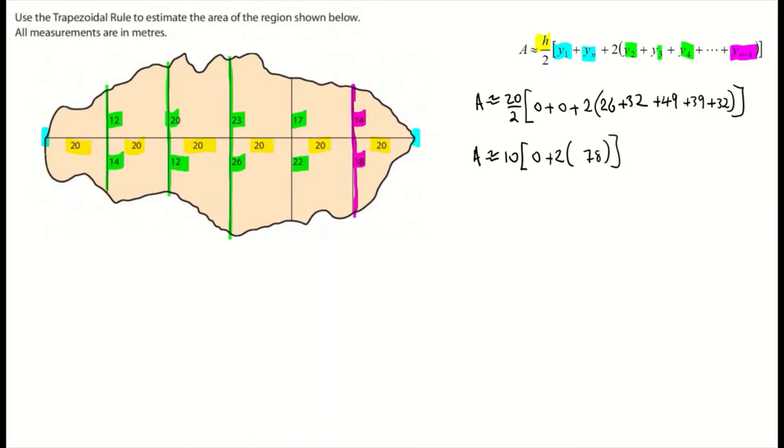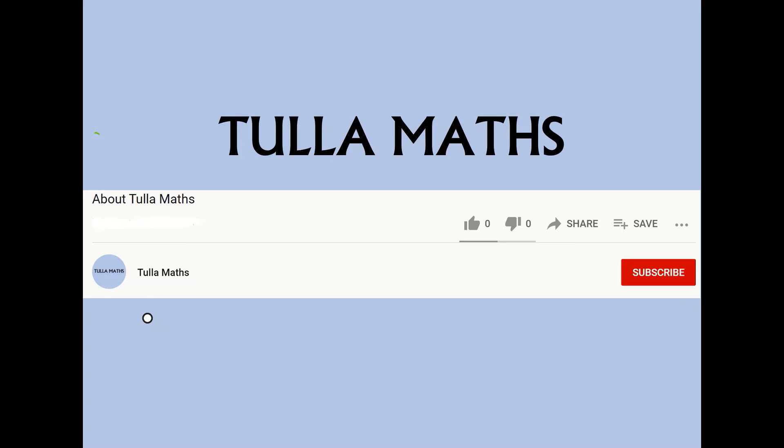My next step now is going to be multiplying that 2 into the 178, and 2 multiplied by 178 is 356. So area is approximately equal to 10 times 0 plus 356. When I add 0 and 356 together, I get 356. And now I'm going to multiply in that 10 and I get 10 multiplied by 356. So the approximate area of this shape is 3560 meters squared. Thank you for watching another tutorial video from Tullamaths.